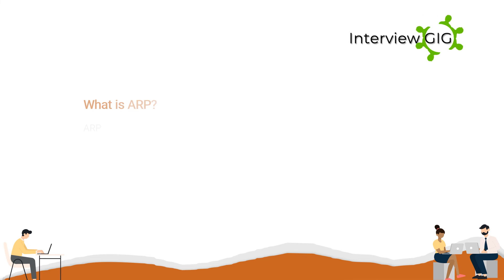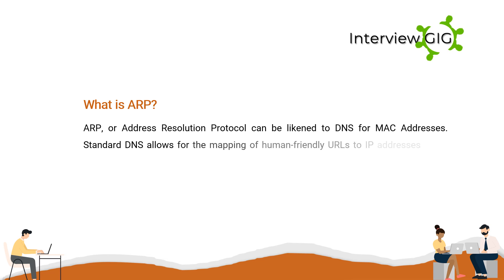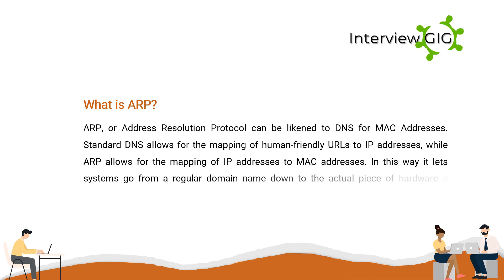What is ARP? ARP, or Address Resolution Protocol, can be likened to DNS for MAC addresses. Standard DNS allows for the mapping of human-friendly URLs to IP addresses, while ARP allows for the mapping of IP addresses to MAC addresses. In this way, it lets systems go from a regular domain name down to the actual piece of hardware it resides upon.